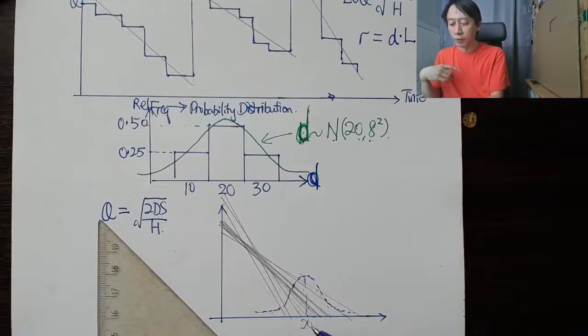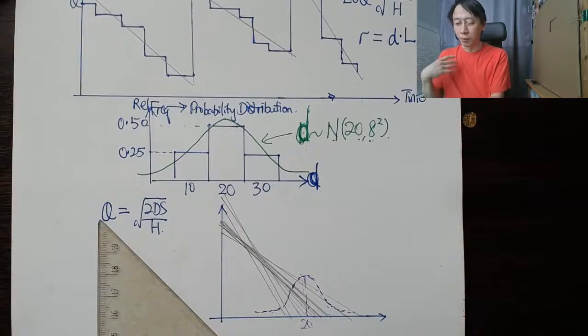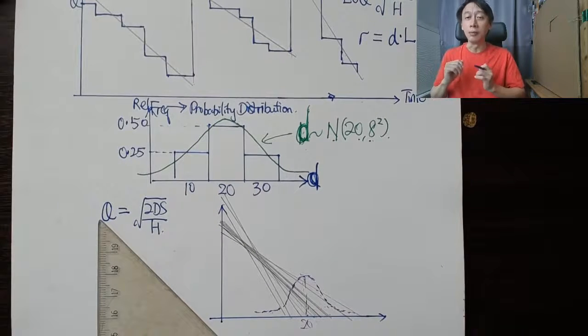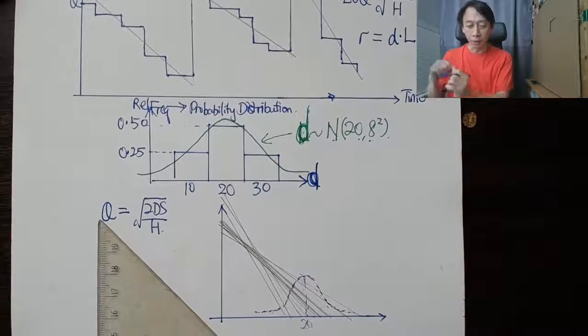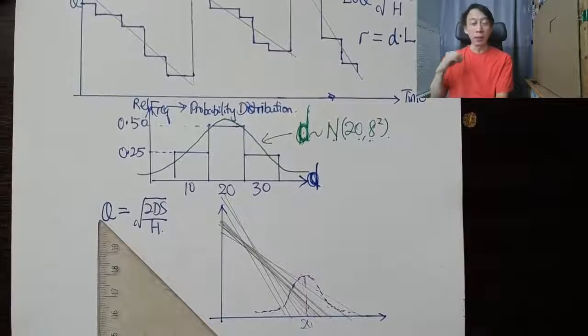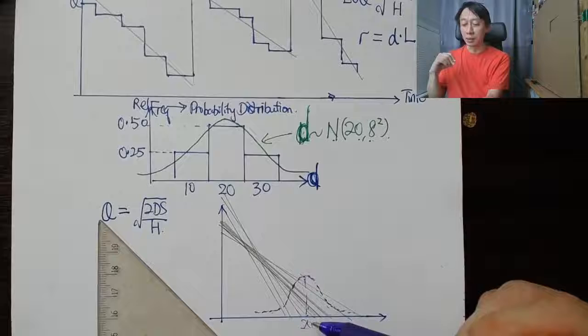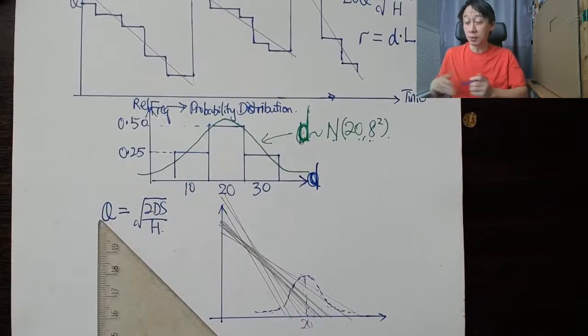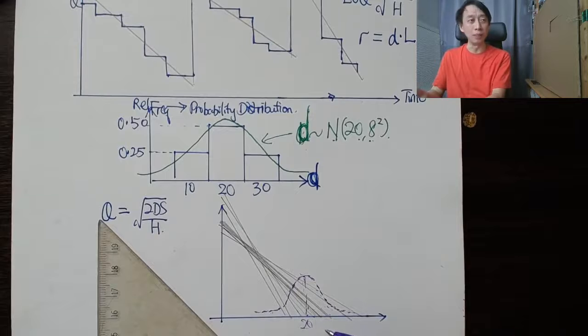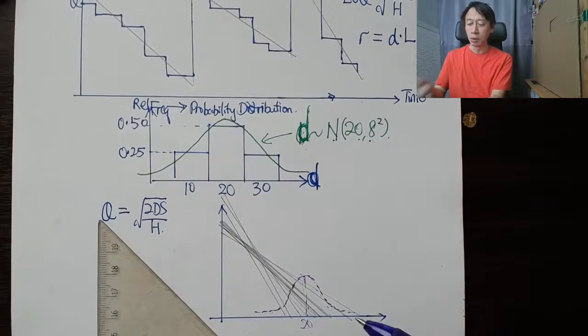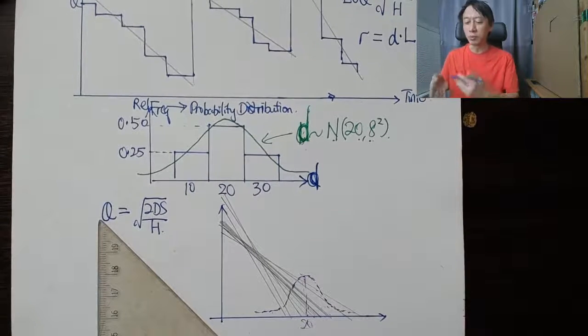So the idea is, with such changes, what can we do about our order quantity? Because we would like to fix it under the continuous review policy. The idea goes that, can we assume that the daily demand is the mean daily demand, fix it as a constant? Because that's the demand quantity that is most frequently encountered. Because normal distribution, the mean is the mode, so the most frequently observed demand quantity is 20.